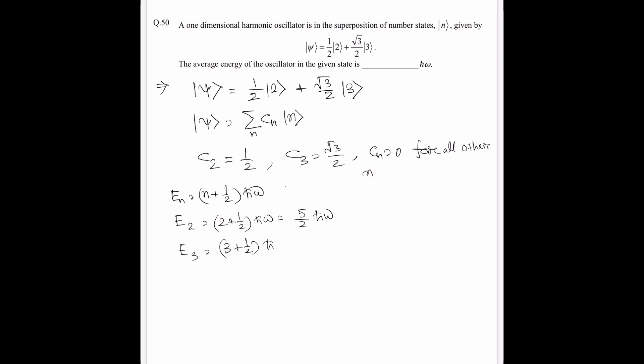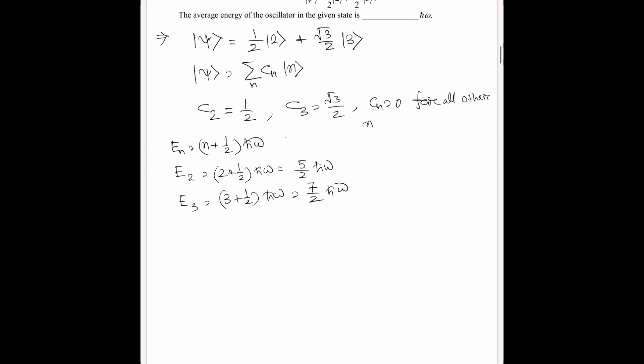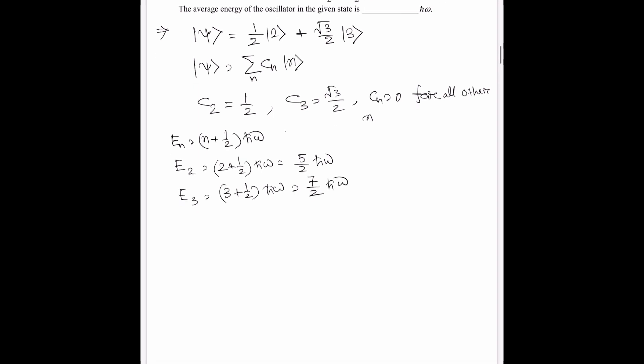and E3 is (3 + 1/2)ℏω, that is 7/2 ℏω. Now the expectation value of energy E is |cn|² En. It is basically mod of cn square times En.